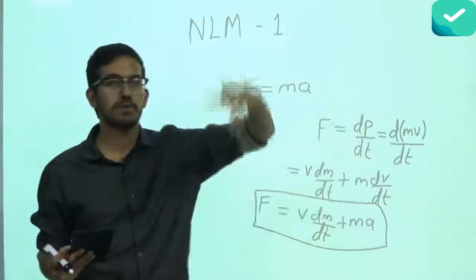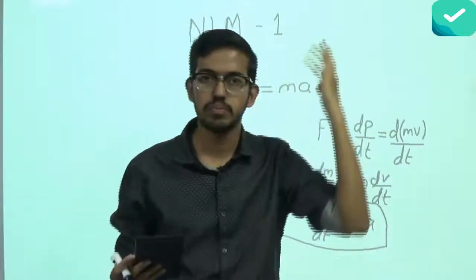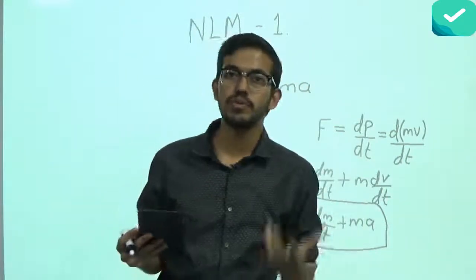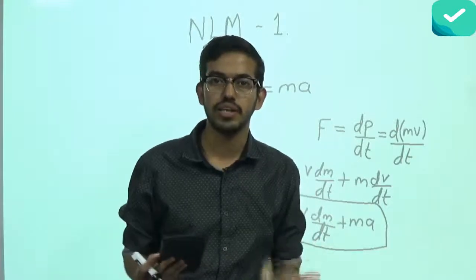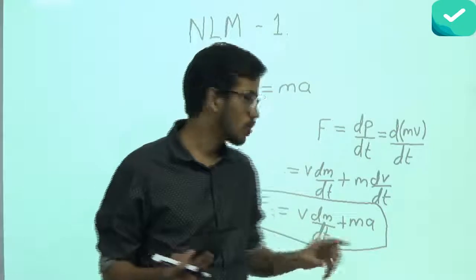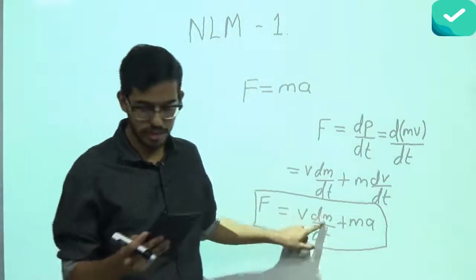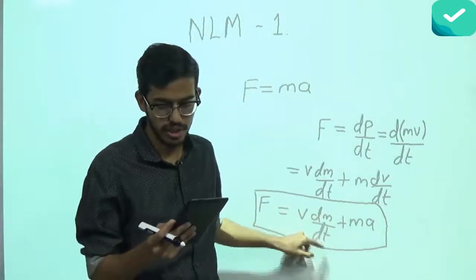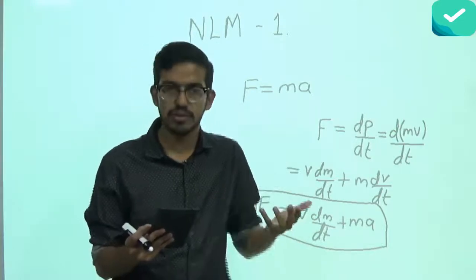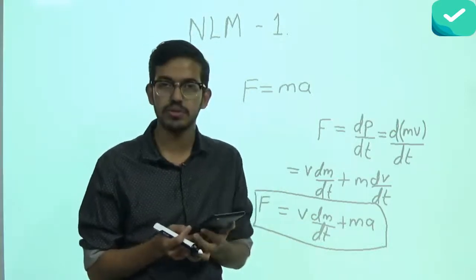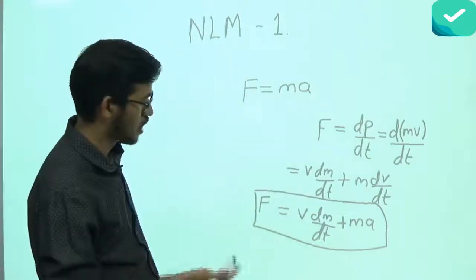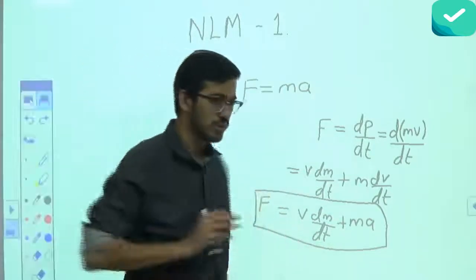Because as a rocket propels upward, you know its major portion is made of fuel — the major mass comes from fuel. As the rocket goes up, fuel burns and mass also changes at a particular rate. We have just begun talking about Newton's laws of motion. So I hope this is clear — this is the actual Newton's second law.